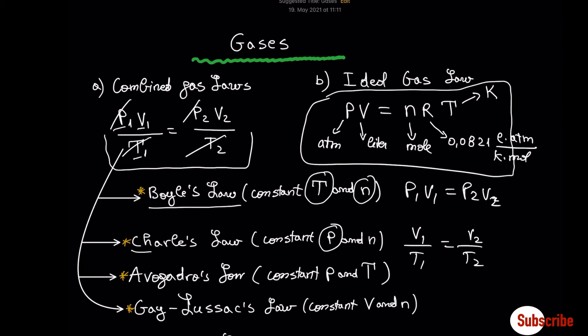Avogadro's law is another law that we can express as V1/N1 = V2/N2. We also have Gay-Lussac's law.